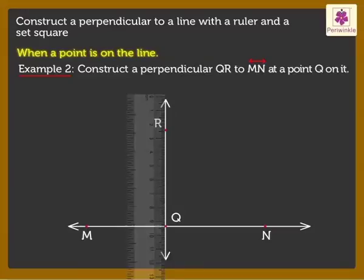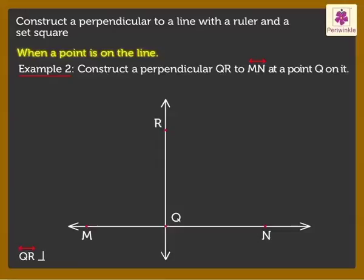Thus, we say Line QR perpendicular to Line MN is obtained.